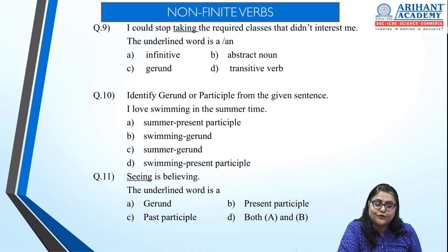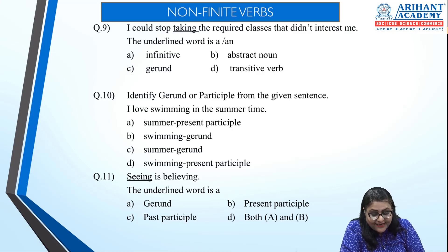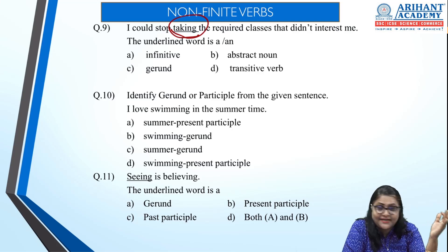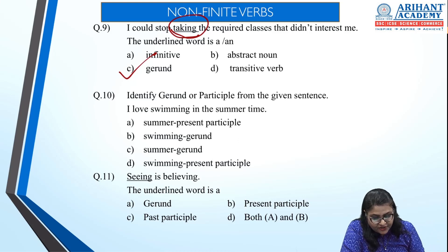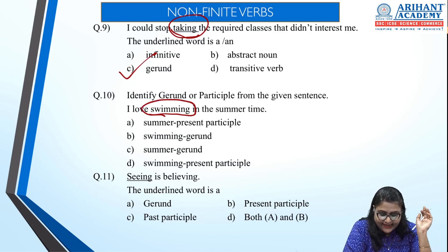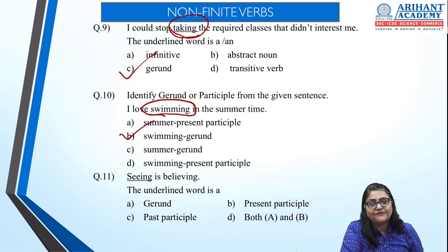Let's solve some MCQs on non-finite verbs. First: 'I could stop taking the required classes that didn't interest me.' The underlined word is 'taking' — it ends in '-ing', so it can be present participle or gerund. Only gerund is given as an option, so the answer is gerund. Next: 'I love swimming in the summertime.' What do I love? Swimming — that's the name of the activity, so it is a gerund.